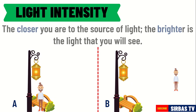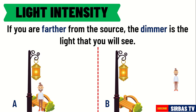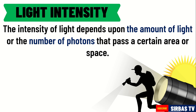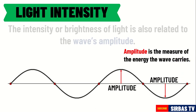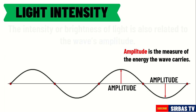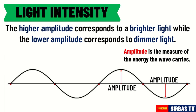On the other hand, if you are farther from the source, the dimmer is the light that you will see. Always remember that the intensity of light depends upon the amount of light, or the number of photons, that pass a certain area or space. The intensity or brightness of light is also related to the wave's amplitude. The higher amplitude corresponds to brighter light, while lower amplitude corresponds to dimmer light.